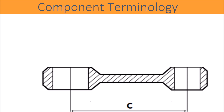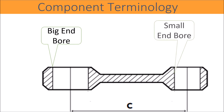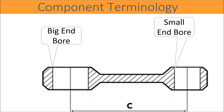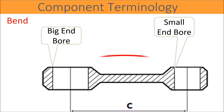Big end diameter: as the name indicates, the diameter in large size is called the big end diameter. Small end diameter: the diameter in small size is called small end diameter. Bend: the parallelism between the big end hole axis and small end hole axis is called the bend of the connecting rod. The direction of the parallelism is important for the bend.